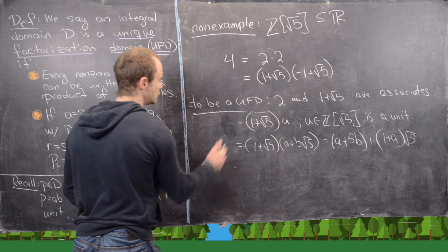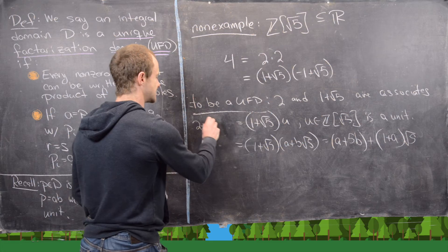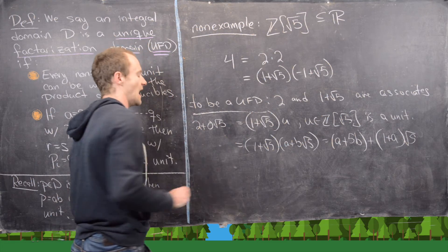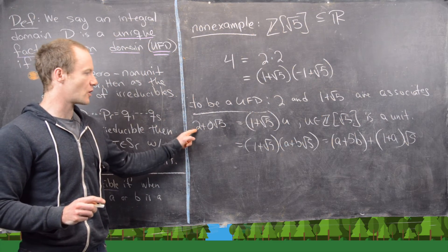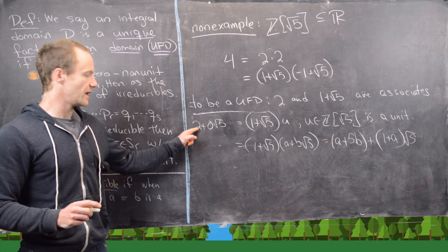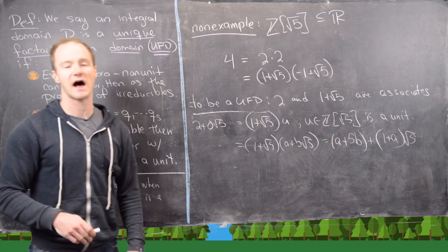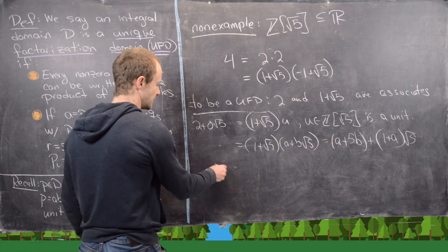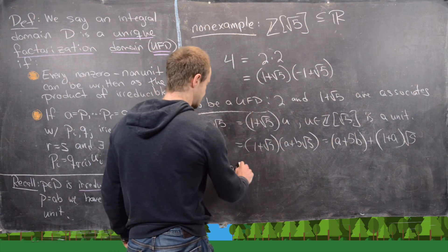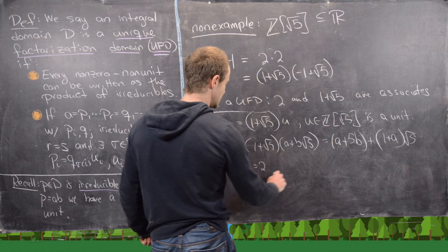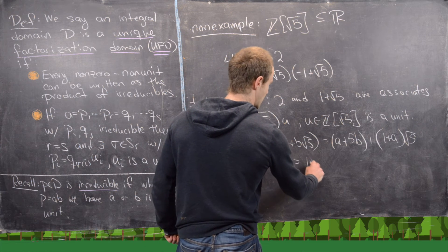That means we can take this 2 over here and write it as 2 plus 0 root 5 and then equate the coefficients of 1. In other words, the rational numbers and the coefficients of root 5 on either side of the equation. So that's going to give us A plus 5B equals 2 and 0 equals 1 plus A.